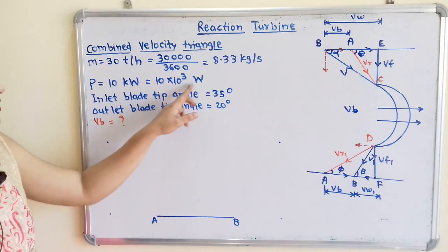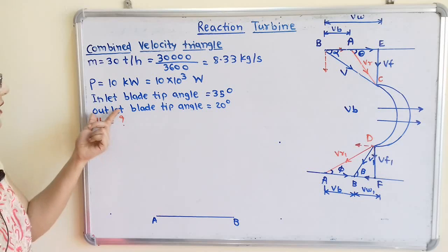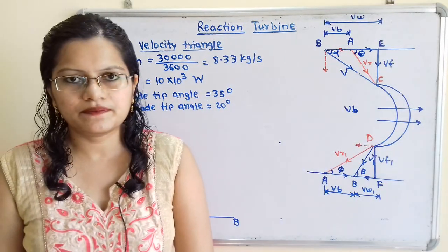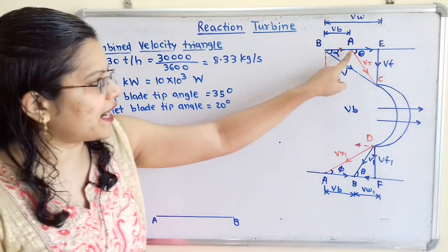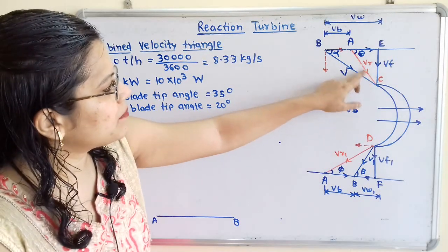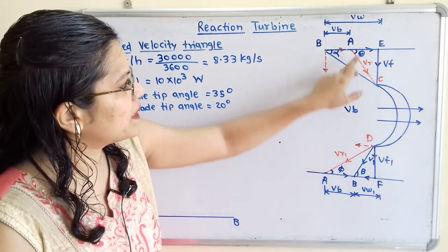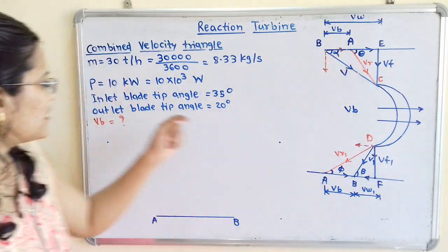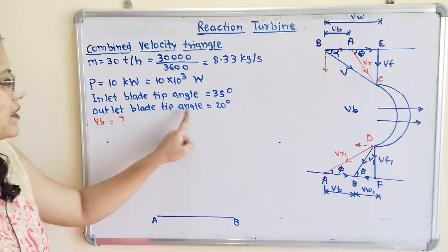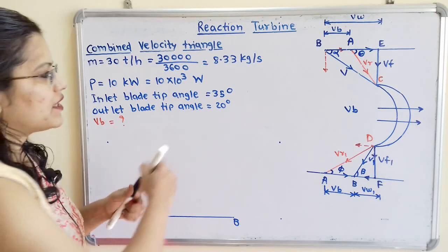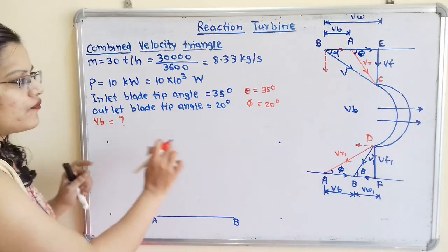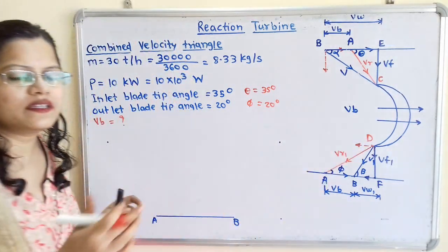Power P equals 10 kW, which is 10 × 10³ watts. The inlet and outlet blade tip angles are given. For shockless entry, the relative velocity at inlet and outlet tips must be tangential to the blade angle. The angles theta and phi correspond to the blade tip angles, so theta equals 35 degrees (inlet) and phi equals 20 degrees (outlet). We need to find VB.